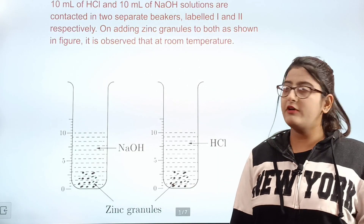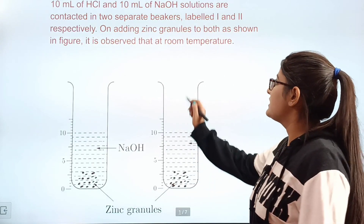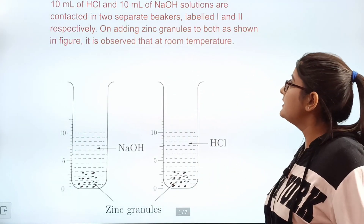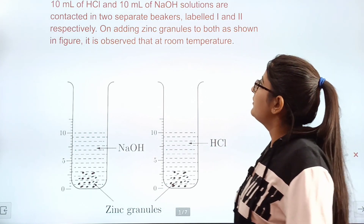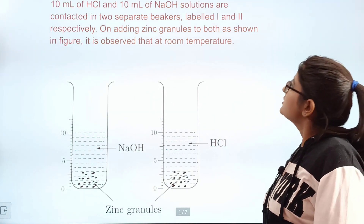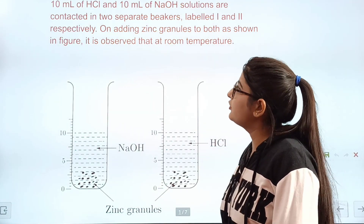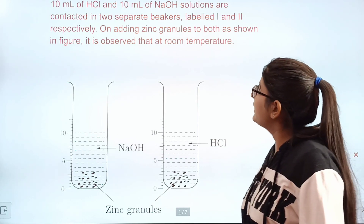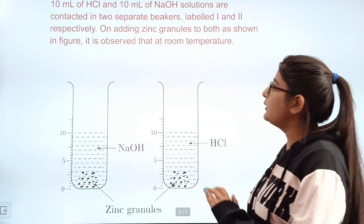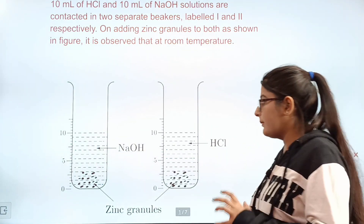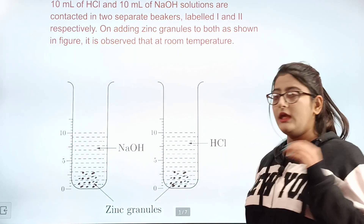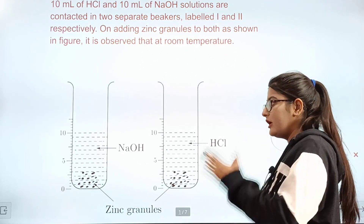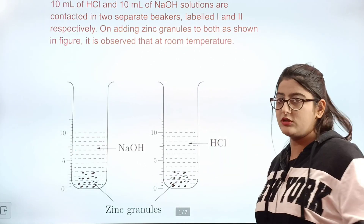Question 1: 10 ml of hydrochloric acid and 10 ml of sodium hydroxide solutions are placed in two separate beakers labeled 1 and 2 respectively — so beaker 1 has hydrochloric acid and beaker 2 has sodium hydroxide.